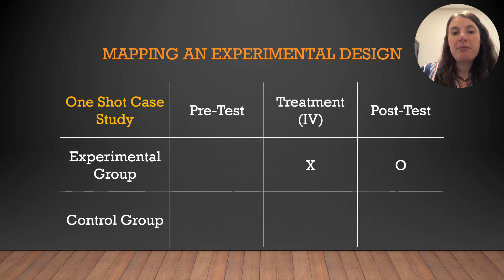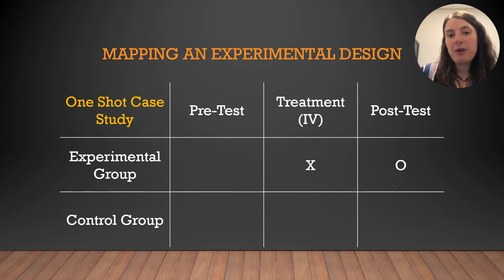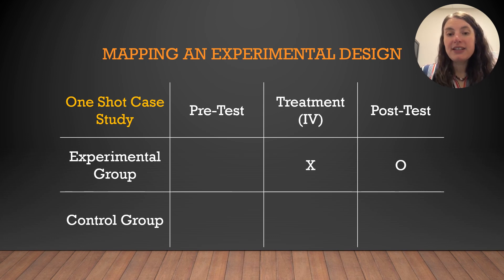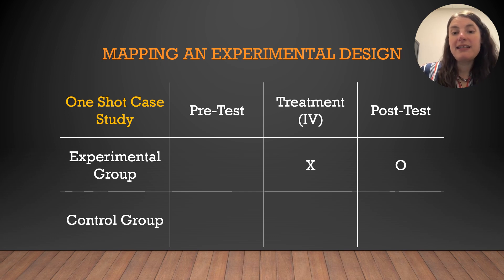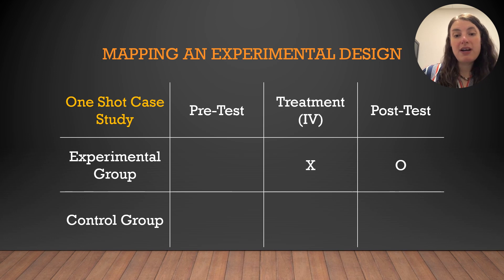The last type of quasi-experimental design is the one-shot case study. This is the easiest experimental design but the absolute worst in terms of proving causation. Here you use a cross-sectional design in which data is only collected one time for one group, so there's no way to compare before and after, and no way to compare people who did and did not receive the independent variable. That said, this is one of the most common designs because it is so simple.